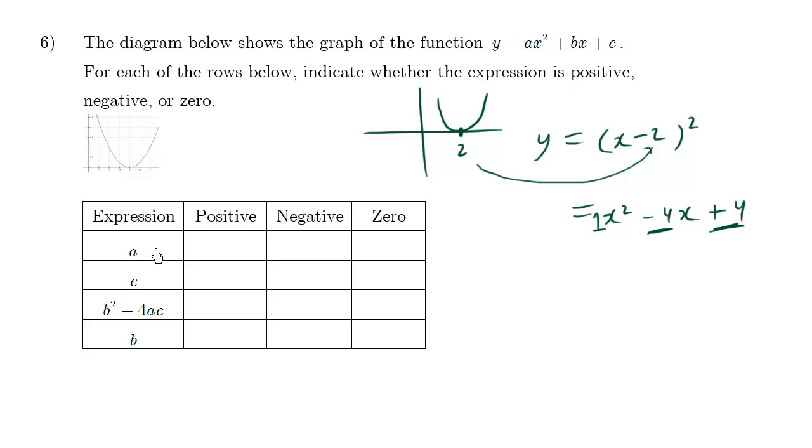So when you're talking about the a-value, the a-value happens to be one, which is positive. This is our a-value, so this is positive. The c-value, this is our c-value here, is positive.